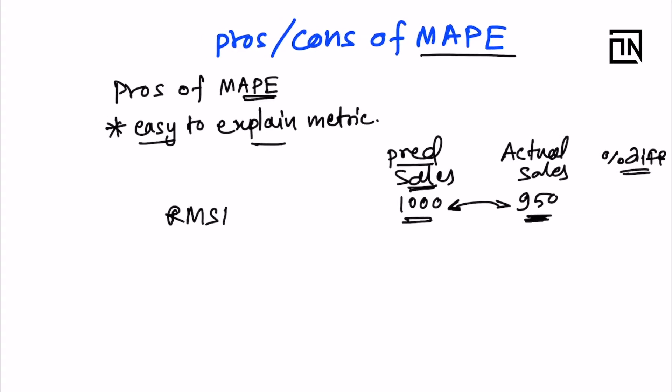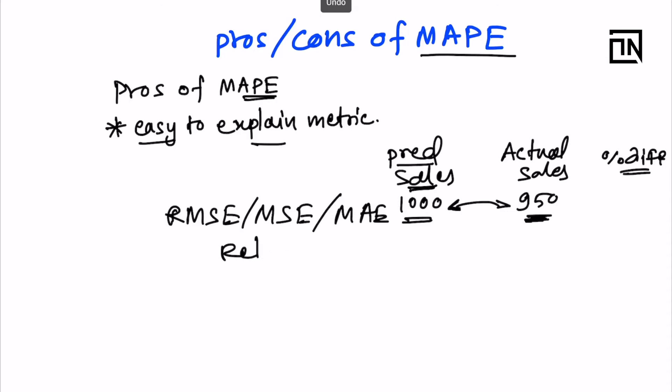MAPE is easy to explain compared to other metrics like RMSE, MSE, or MAE. Those are relative metrics — relative means you cannot use them to directly calculate accuracy, because for different scales of data they produce different numbers, and you cannot do 100 minus RMSE or MSE. So MAPE is the go-to metric whenever we are trying to explain accuracy.